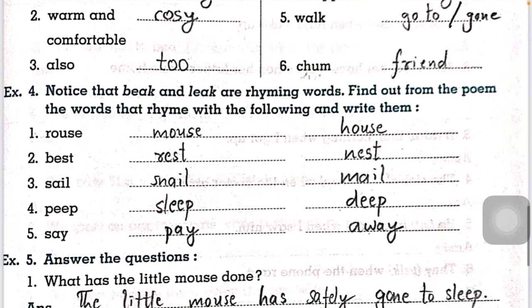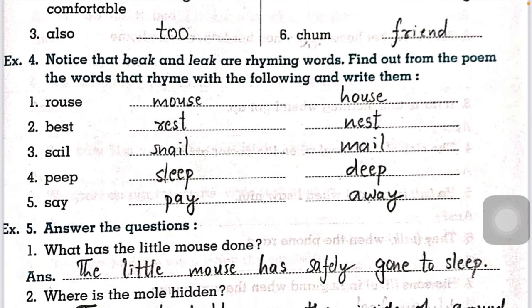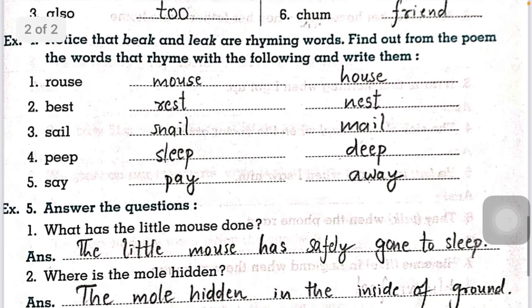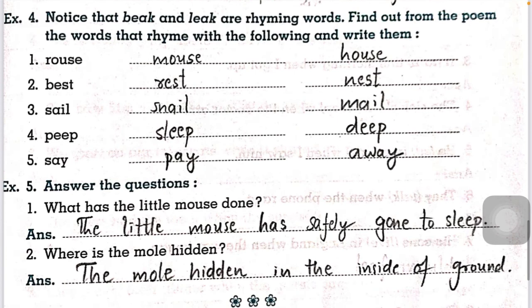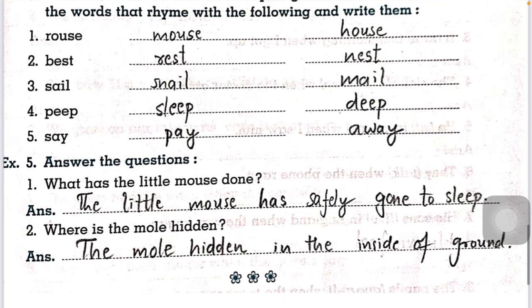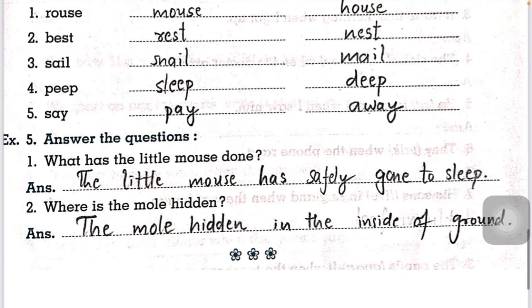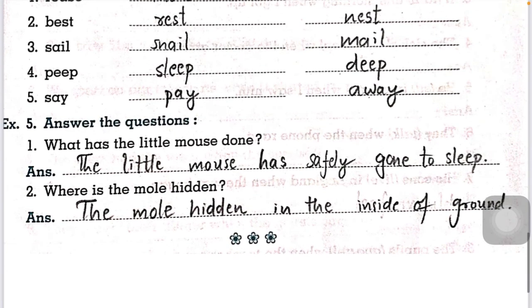Now example number four: notice that 'beak' and 'lake' are rhyming words. Some words are given and we have to find rhyming words from the poem. The rhyming pairs are: mouse rhymes with house; rest rhymes with nest; snail rhymes with mill; slip rhymes with deep; and pay rhymes with away.